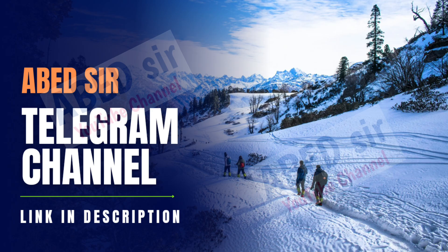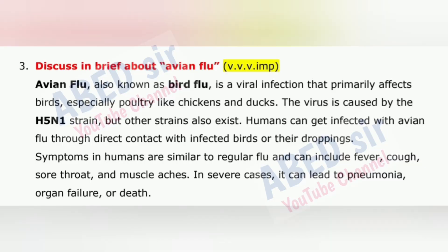Next important question is 3: Discuss in brief about Avian Flu. Avian Flu, also known as bird flu, is a viral infection that primarily affects birds, especially poultry like chickens and ducks. The virus is caused by the H5N1 strain, but other strains also exist. Humans can get infected with avian flu through direct contact with infected birds or their droppings. Symptoms in humans are similar to regular flu and can include fever, cough, sore throat and muscle aches.